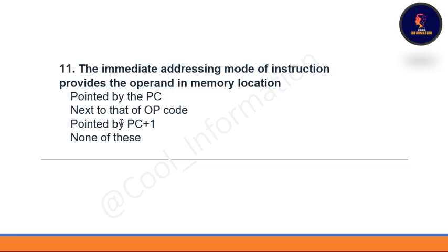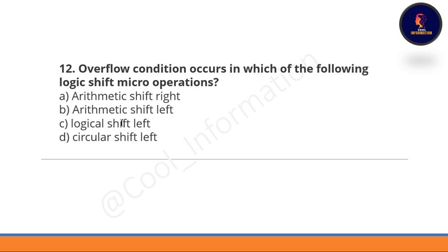Question 11: The immediate addressing mode of an instruction provides the operand in memory location — option A: pointed by the program counter, option B: next to that of opcode, option C: pointed by program counter plus one, option D: none. The correct option is B, which is next to that of opcode.